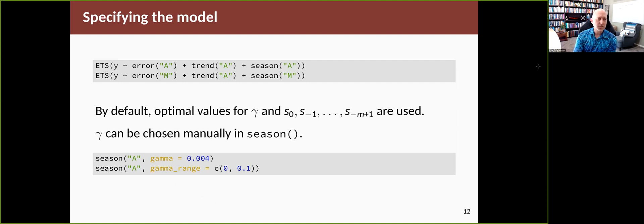And again, all you have to do is to change the error part of the model specification and everything should work OK. By default, it will then go ahead and estimate all the parameters, optimal values for the gamma and all of the seasonal components. And if you've got trend, optimal values for beta and b0 and optimal values for alpha and l0. And as for the others, you can override the optimal choices if you choose.